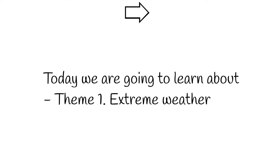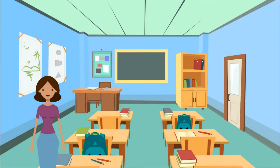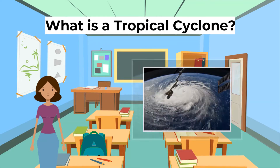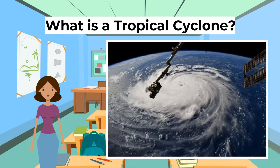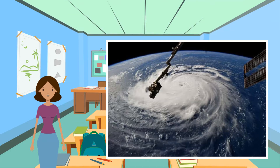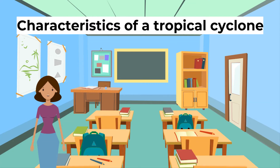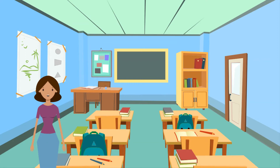Firstly, what is a tropical cyclone? A tropical cyclone is a very large spinning storm that forms in the tropics. Tropical cyclones have winds and torrential rain and usually affect small islands and coastal regions. What are the characteristics of tropical cyclones? Tropical cyclones are characterized by their low pressure, intense weather, and spinning structure.